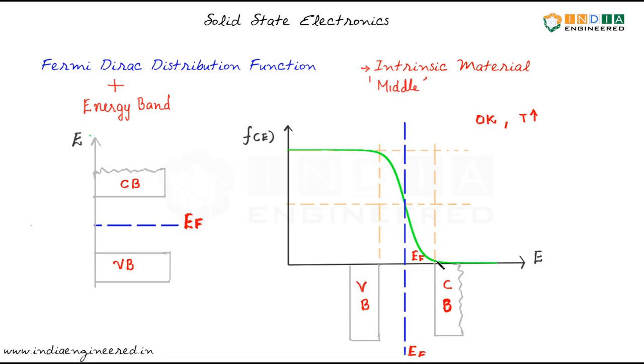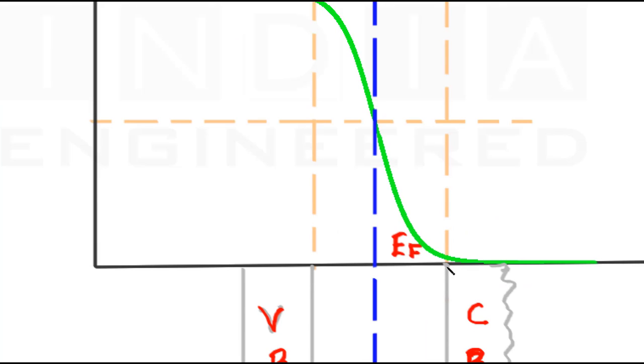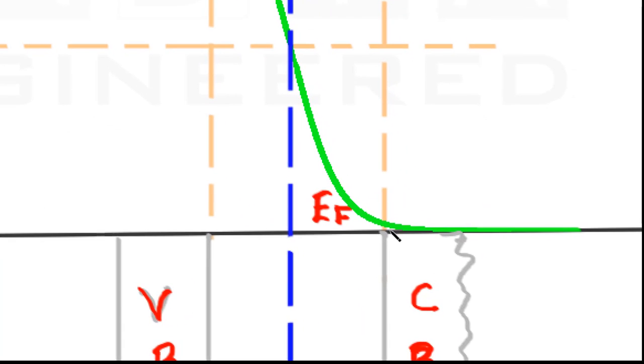If we take a closer look, let's zoom in a little bit. It is really small but you can see that at temperatures above 0 Kelvin, now we have a small probability, a really small probability of finding electrons in the conduction band.